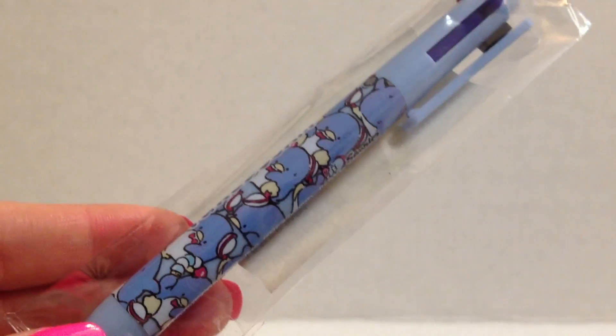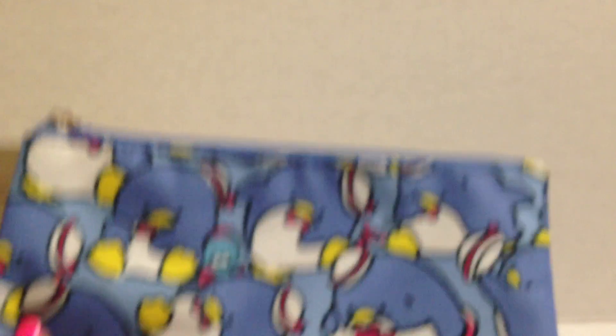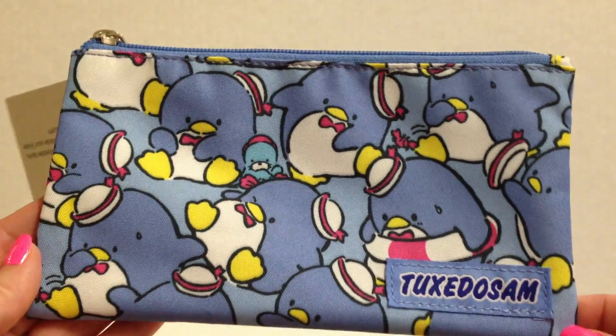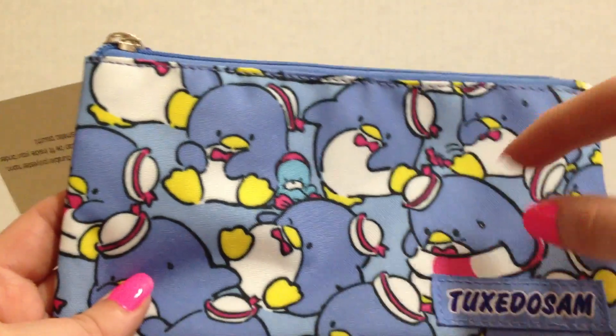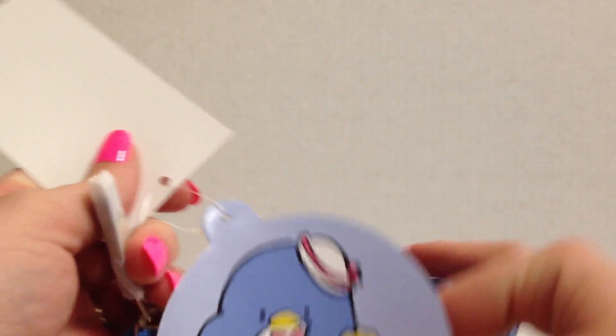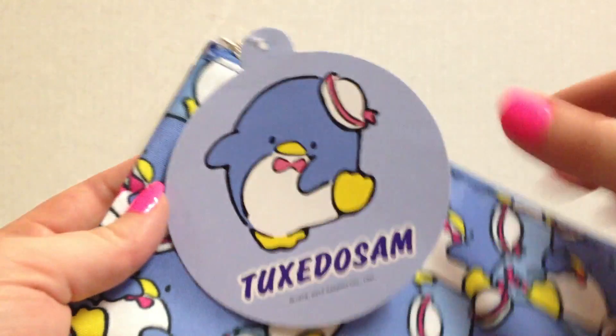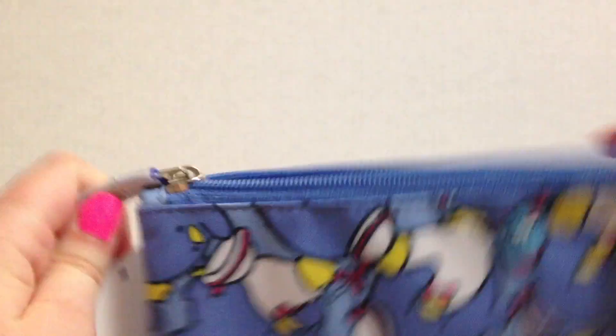Then I got this little pencil case which is super adorable. They had other characters too. I think they had a Hello Kitty and a My Melody one that's kind of this style with a bunch of them on there like a collage. Here's the tag. They also had really cute backpacks and bags. So they had a lot of really cute backpack stuff. So I just got this and the inside is just blue.